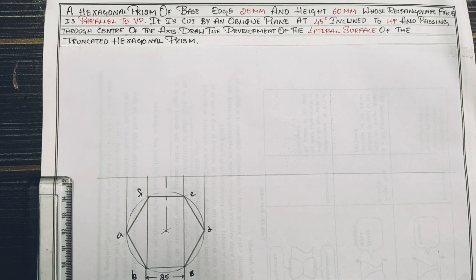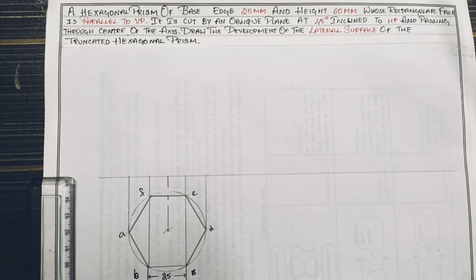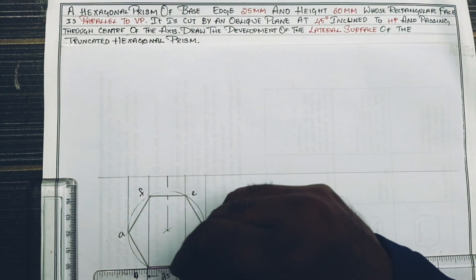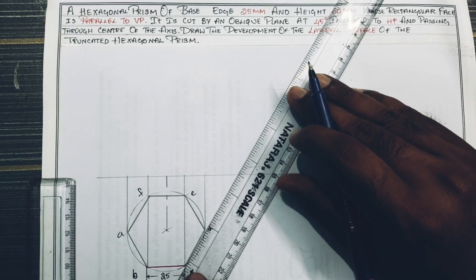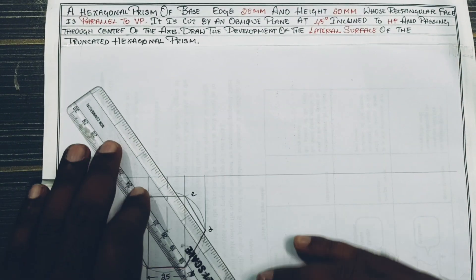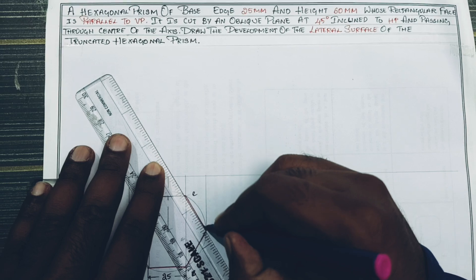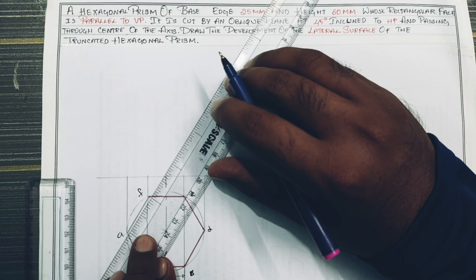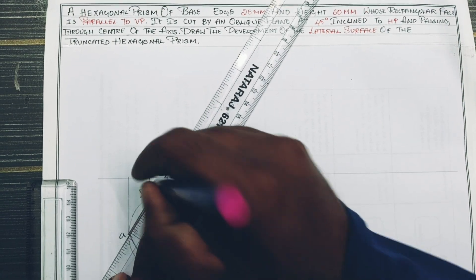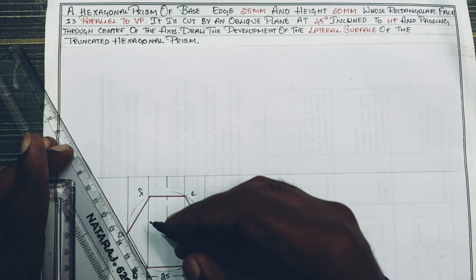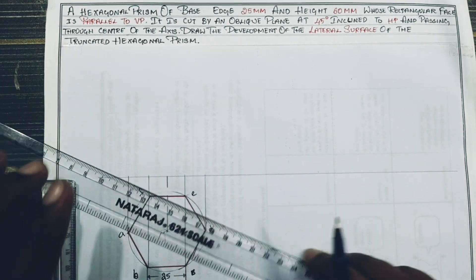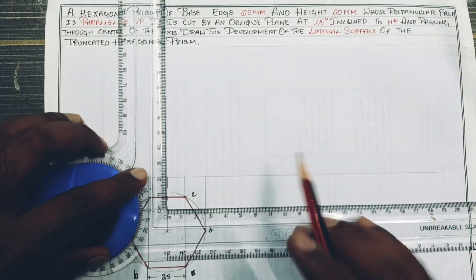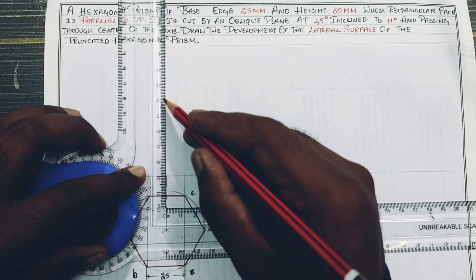Sketch — dark, dark, dark, dark, dark, light. Sketch dark, light. Height 60 — height, 1, 2, 3, 4, 5, 6.